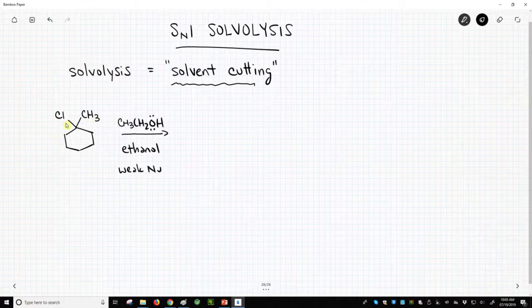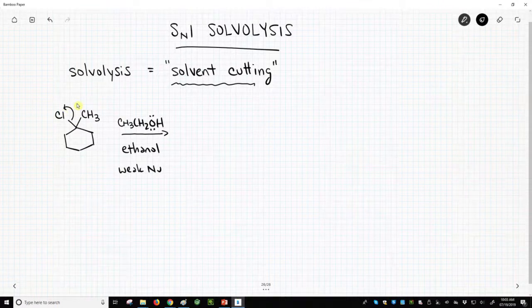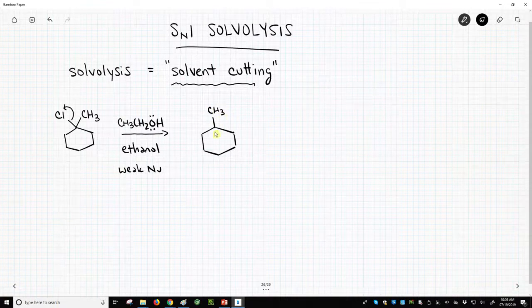Now, here is our alkyl halide. It's a tertiary halide, and that's good to help the loss of this halide, because when we break that bond, we are going to form a carbocation. And that carbocations, they're not great species to make because they don't have a full octet.